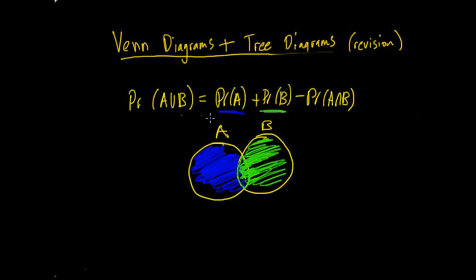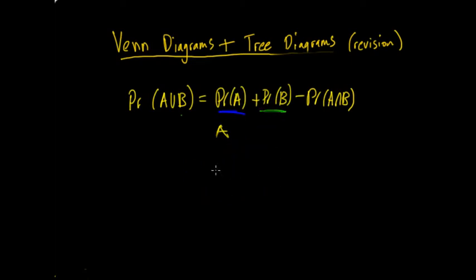So, the union is both these areas, but only the intersection once. But the probability of A and the probability of B, they've encompassed this intersection twice, which would make sense, seeing as it's an intersection, so they're both included in both values. That's why we have to minus the probability of the intersection. So, if you have A, and if you have B, you add the probability of A, add the probability of B, the intersection is included twice, we minus it once, and that's how we get the union.